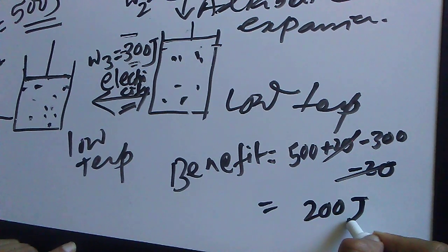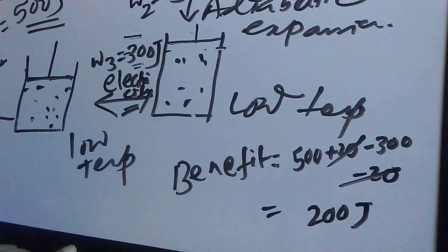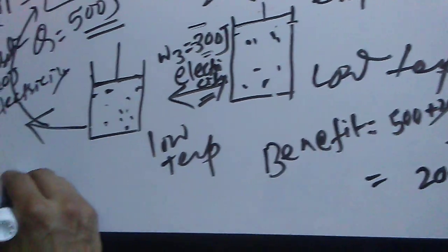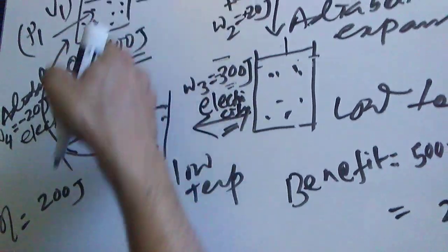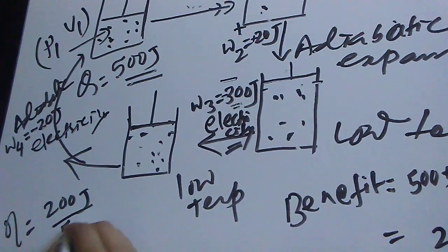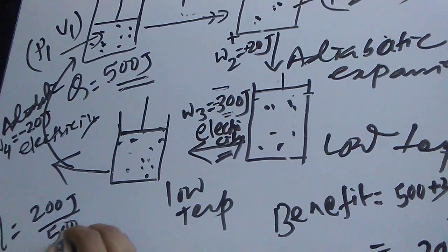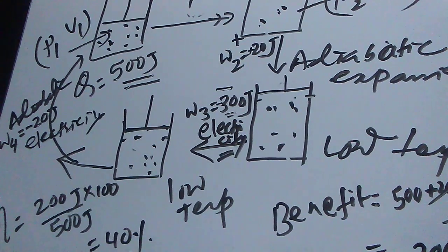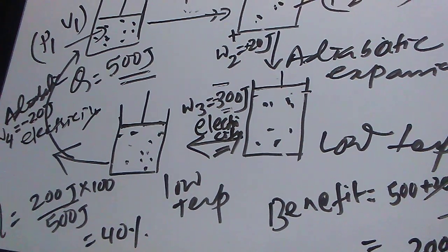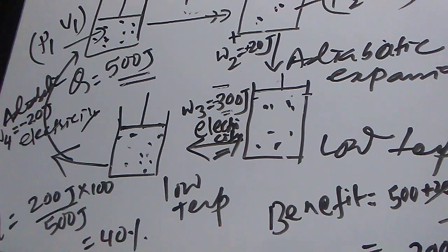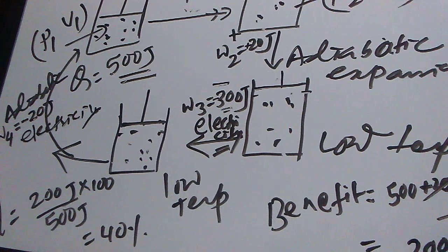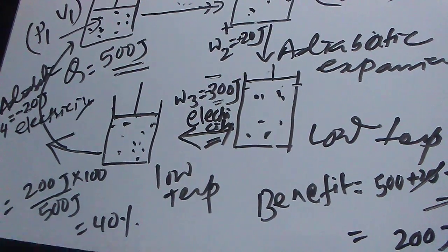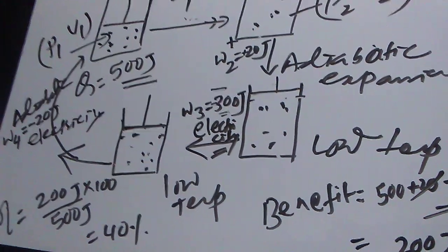The net work or net benefit is 200 joules. To calculate efficiency, divide the net work by the heat input and multiply by 100: 200 divided by 500 times 100 equals 40 percent. This is the Carnot cycle — the Carnot engine is the engine with maximum efficiency. No real machine can have an efficiency greater than the Carnot engine. Thank you very much.